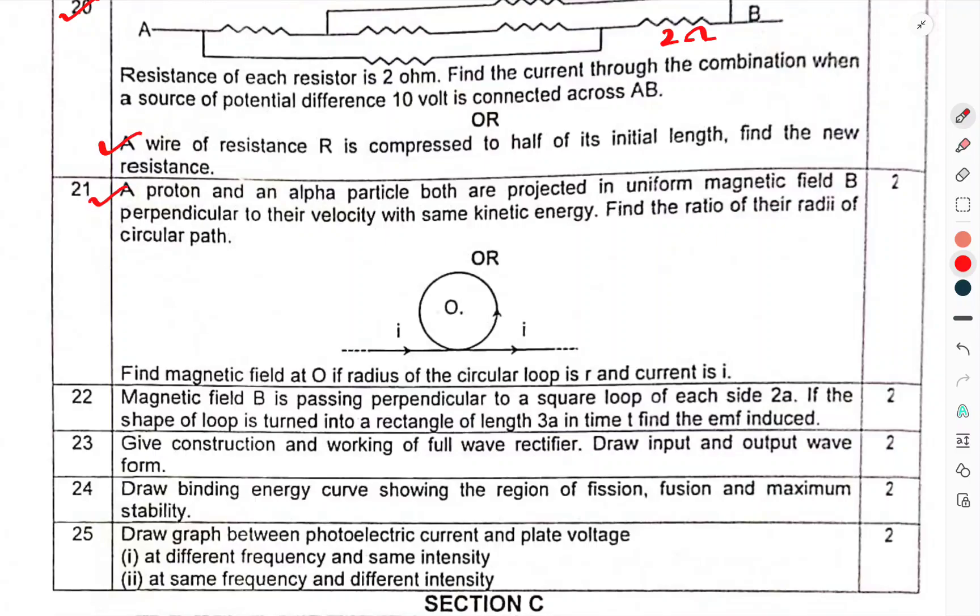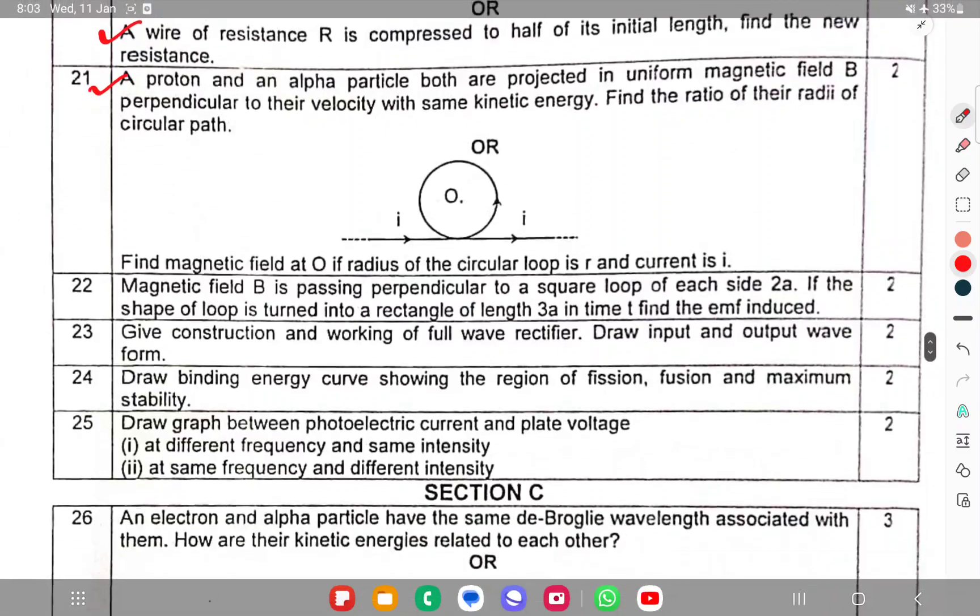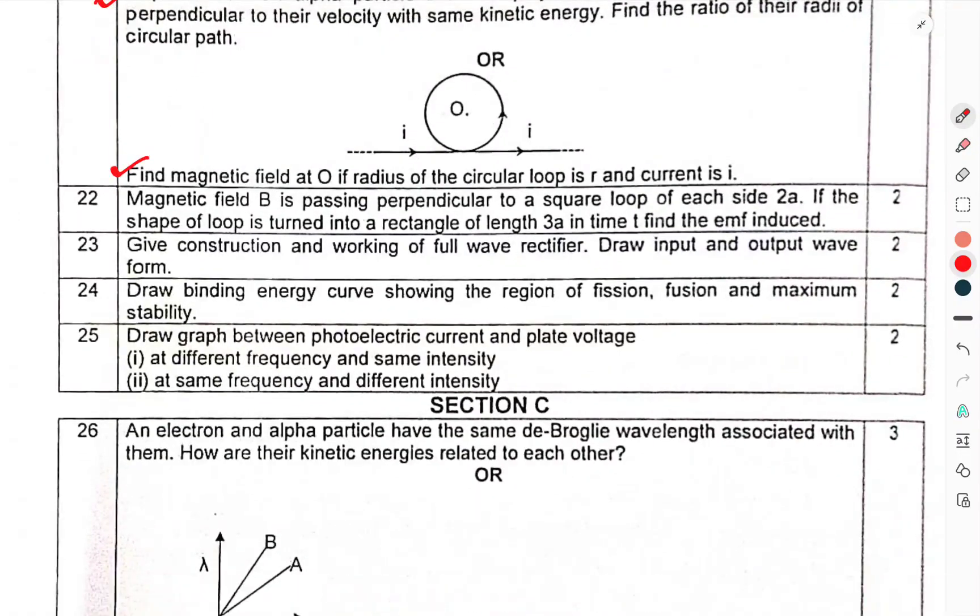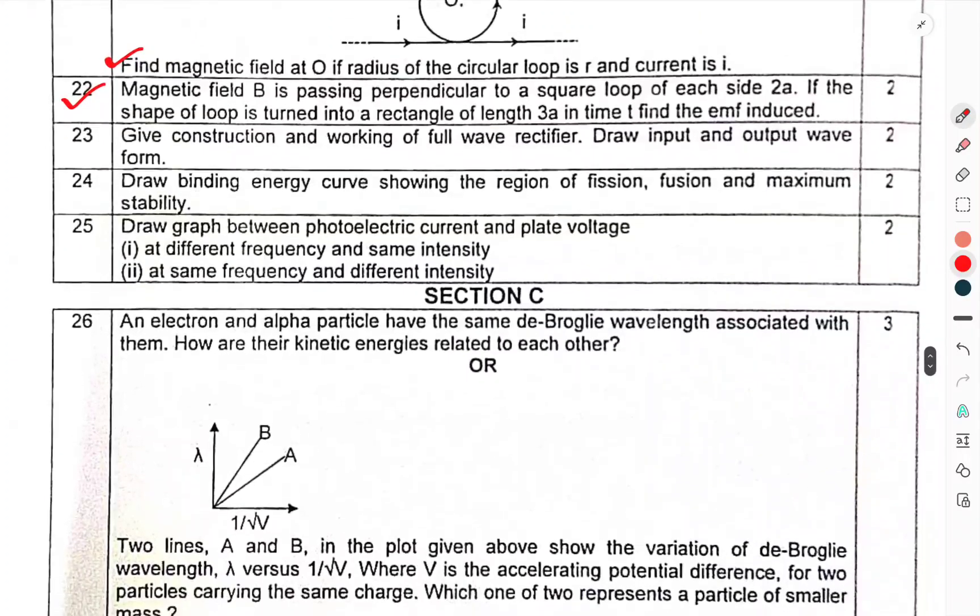Question 21: A proton and an alpha particle both are projected in uniform magnetic field B perpendicular to their velocity with same kinetic energy. Find the ratio of their radii of circular path. Next: Find the magnetic field at O if radius of the circular loop is R and current is I. Question 22: Magnetic field B is passing perpendicular to a square loop of each side 2A. If the shape of the loop is drawn into a rectangle of length 3A in time t, find the EMF induced.